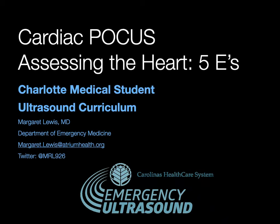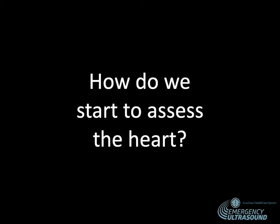Hey team, so this afternoon we're going to talk about how we start assessing the heart. We've already been through how we start to look at the heart, the images we get, the probe marker orientation. We look for our parasternal long axis, our parasternal short axis, our apical four-chamber, and our subcostal views. So what do we do with that information? How do we assess the heart? How do we know what's normal, what's not normal?